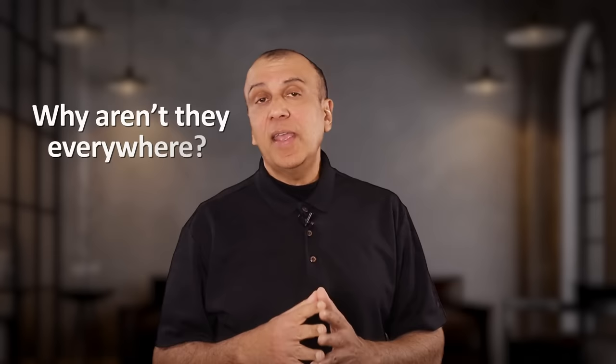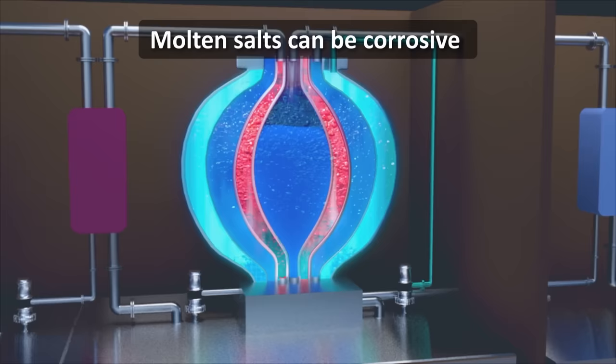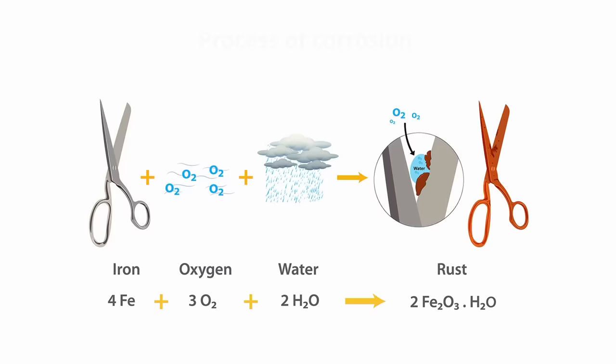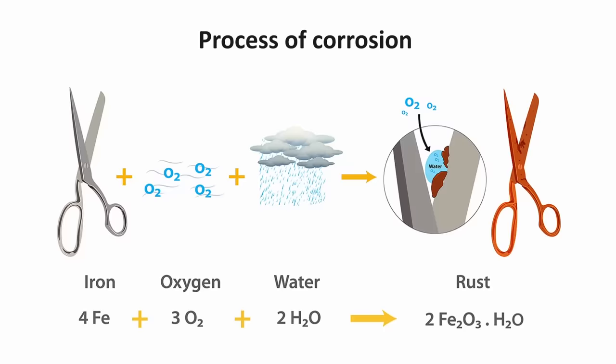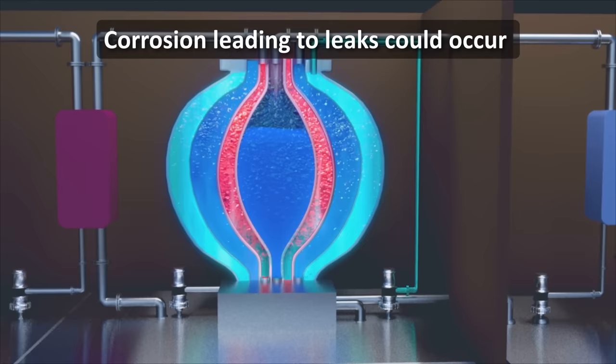So if molten salt reactors are so great, why are they not everywhere? This is a good question and the answer is fairly simple. Molten salts are traditionally highly corrosive. Corrosion is what we commonly know as rust on iron. But more things than just iron can rust. And that in general is what corrosion is. Chemically, it is when the metal container housing the molten salt reacts with oxygen. If you want to see corrosion in action, just put a piece of iron in salt water and see how it begins to rust. A similar problem can occur with molten salt reactors if the corrosion problem is not addressed. Leaks could occur.